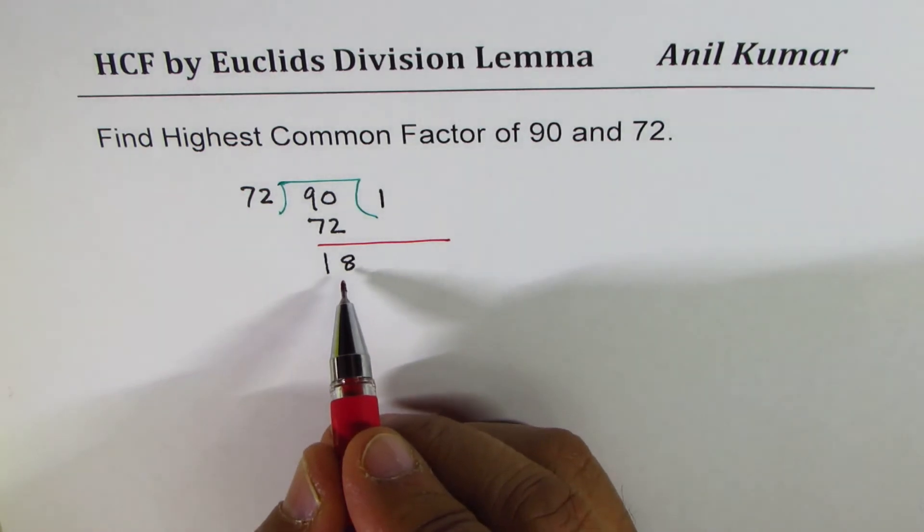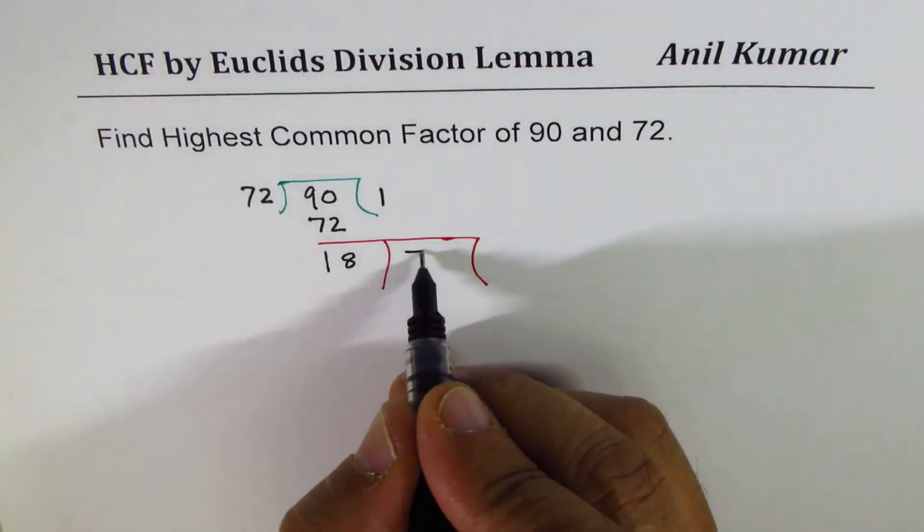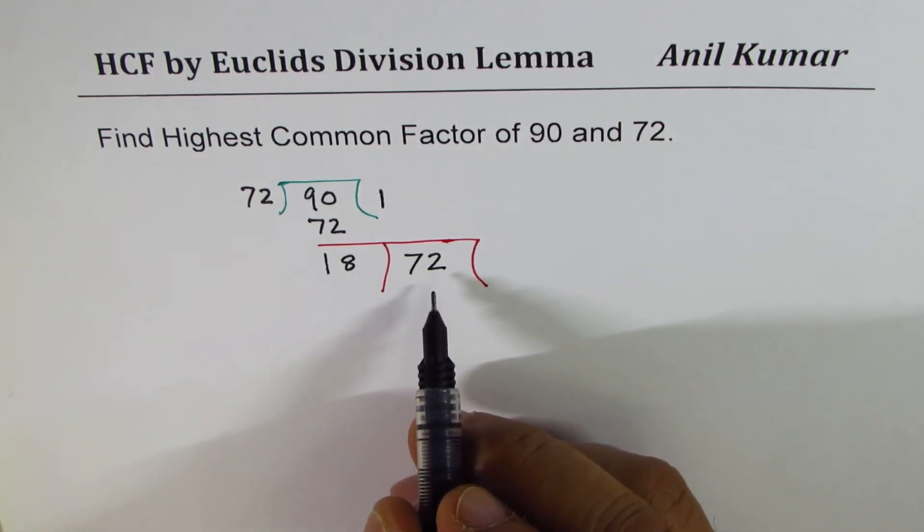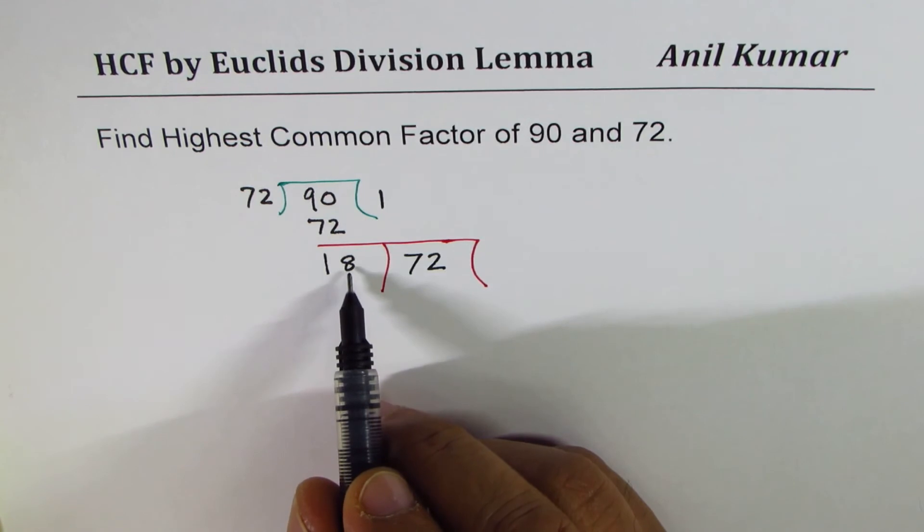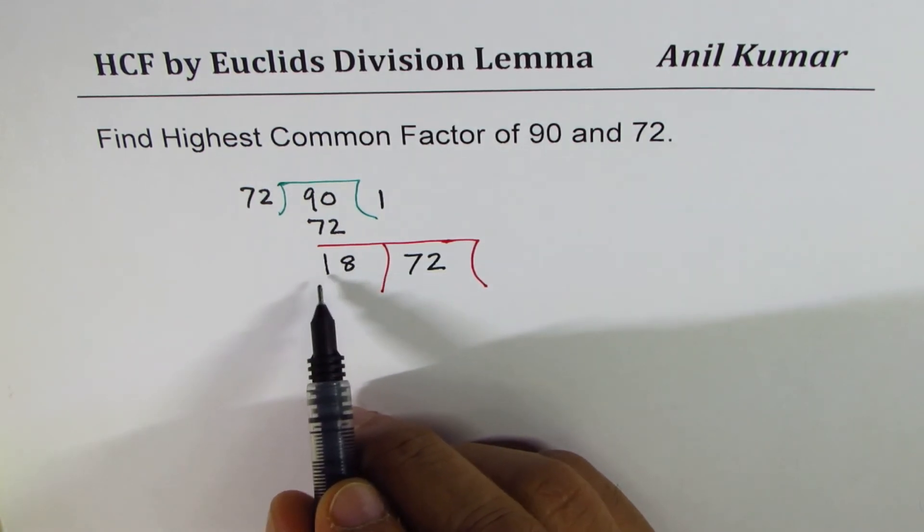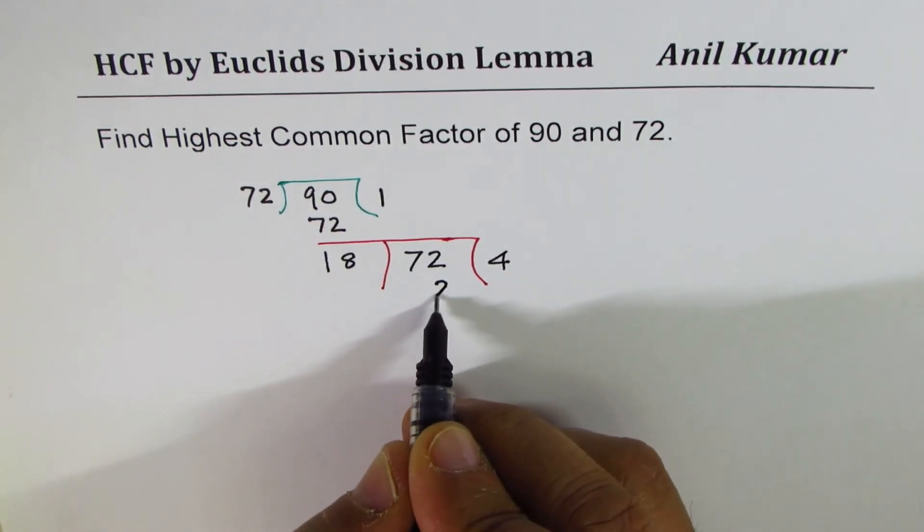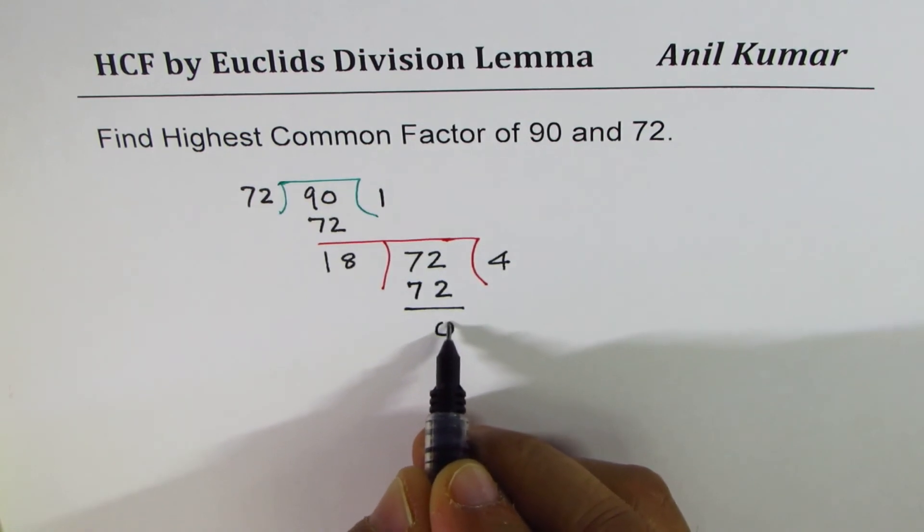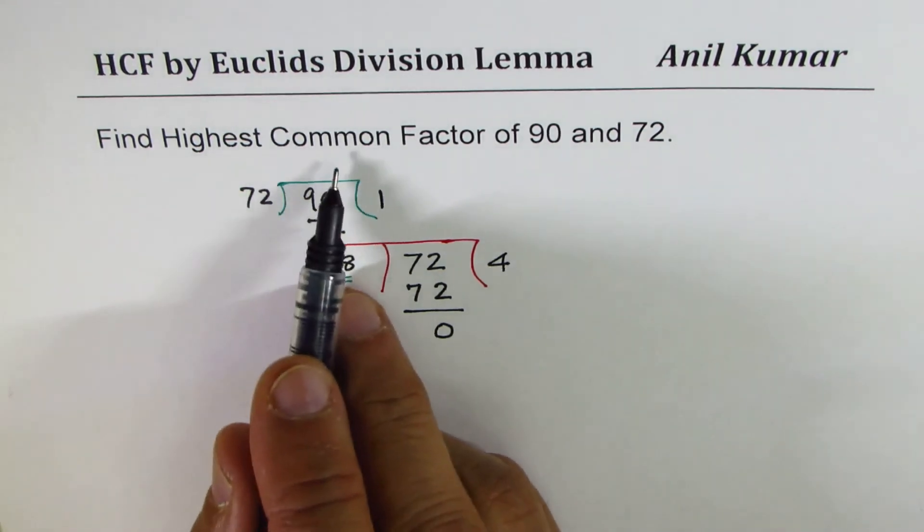Now 18, which is the remainder, will divide into 72. So this process is repeated. 18 times how much can go into 72? 4 times 8 is 32, and 3 gives you 72. So 0 remainder. As soon as you get 0 remainder, we look at the divisor which gave us 0 as the remainder. That divisor is your highest common factor.